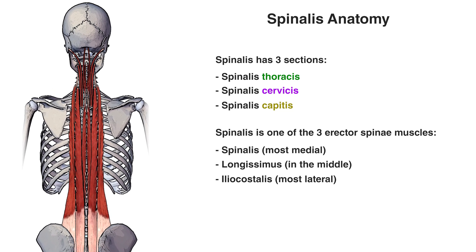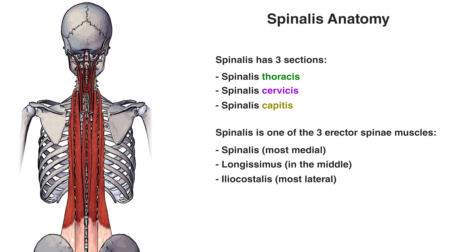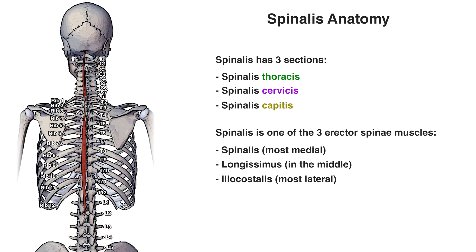Let's take a look at the origin and insertion of the spinalis muscle next. To simplify going over the origins and insertions, I've labelled all of the vertebrae down the right-hand side here and have also numbered all of the ribs on the left-hand side. We're also only going to be describing the left-hand side of this muscle, but bear in mind the origins and insertions are duplicated on the right-hand side as well, because this muscle is present on both sides of the body.